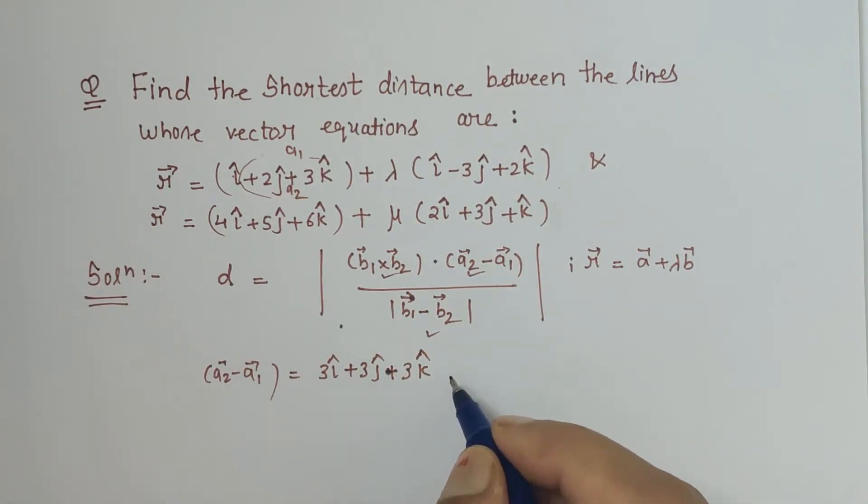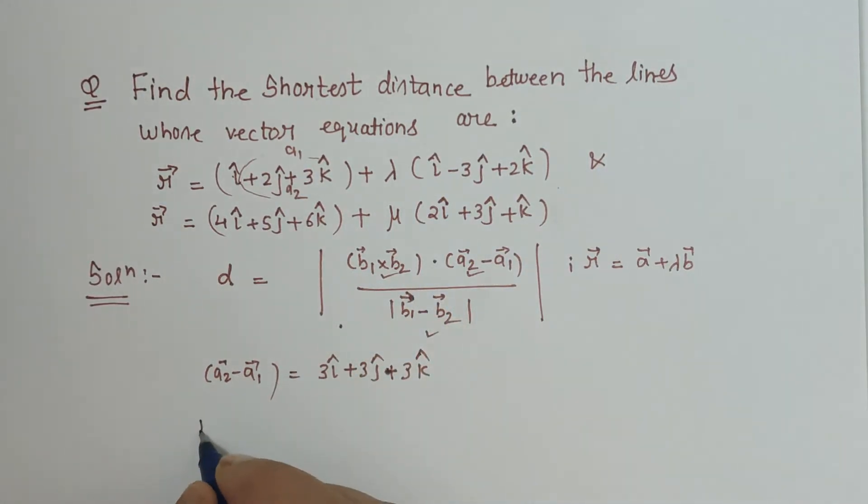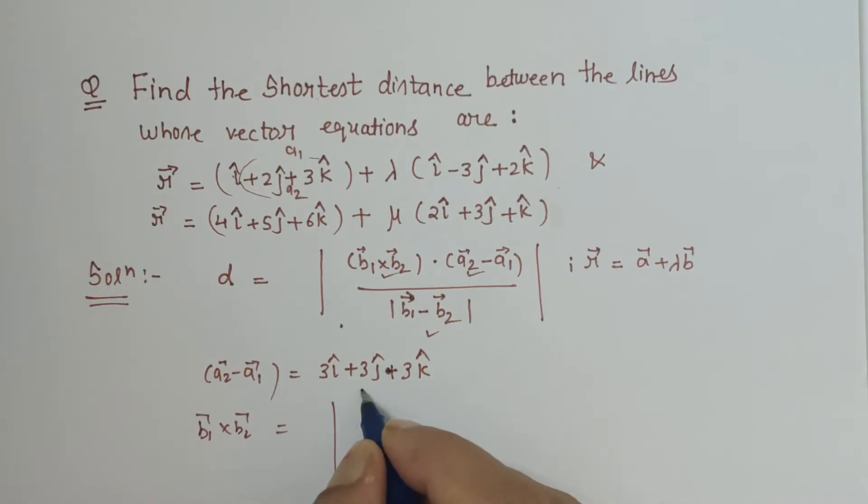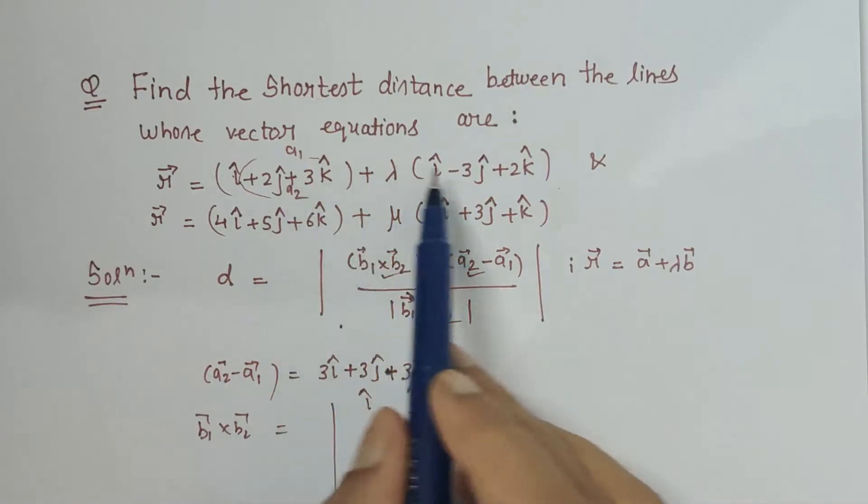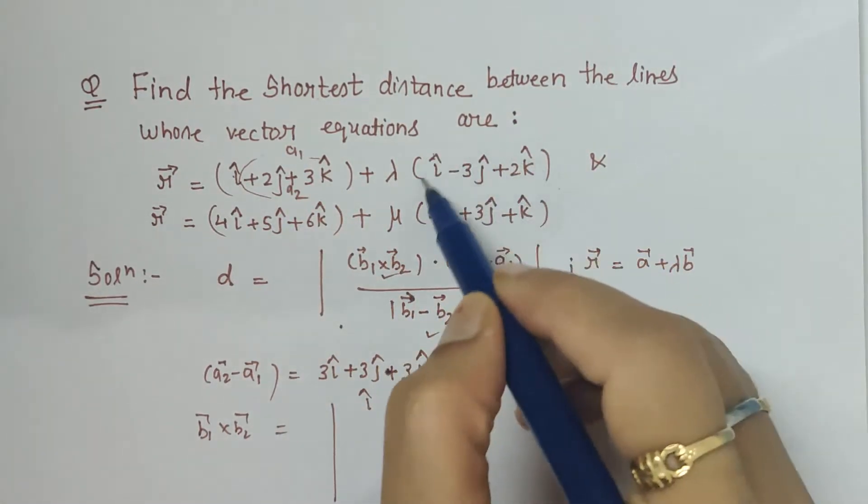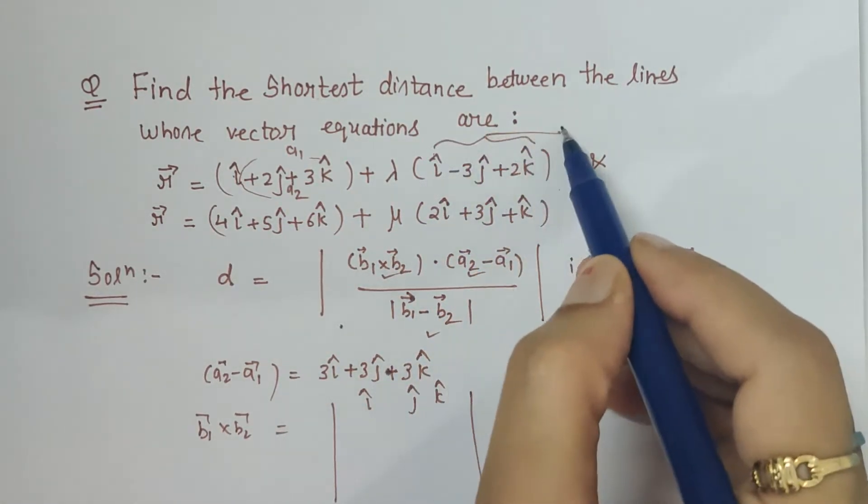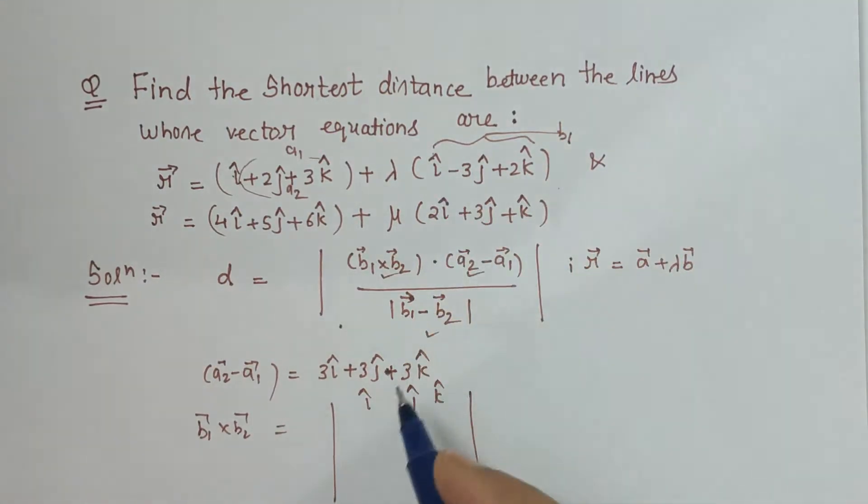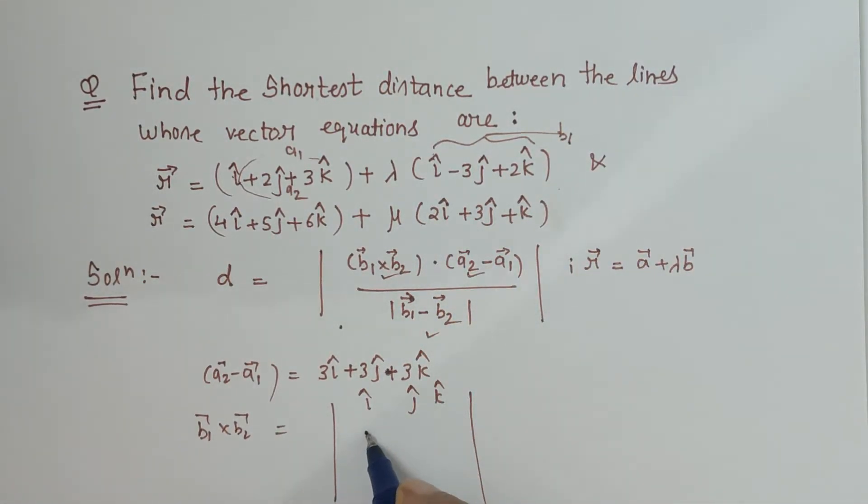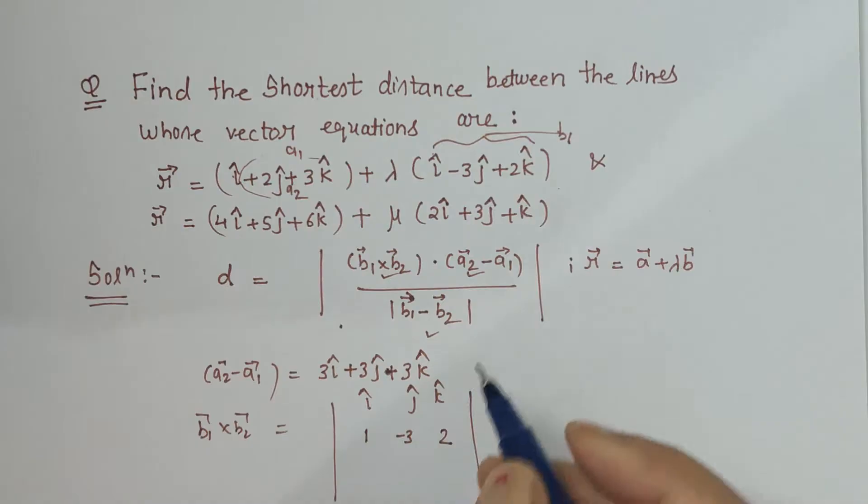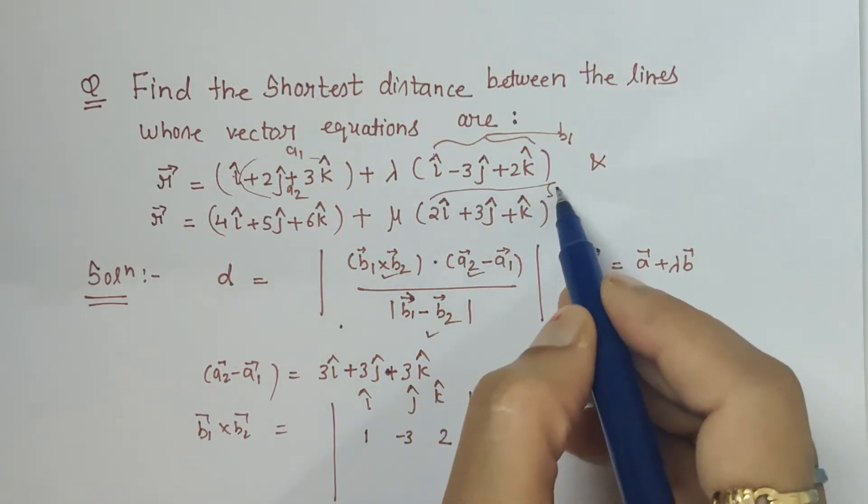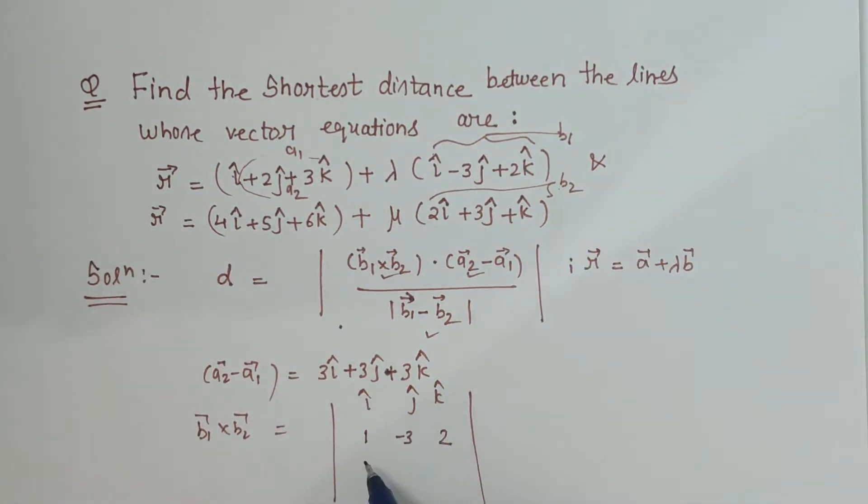Now next is b1 cross b2. So for b1 cross b2 we will find the cross product. First we will write this complete is b1, so I will write the coefficients 1, minus 3, 2 along with their sign, and then this is b2 which is 2, 3, 1.